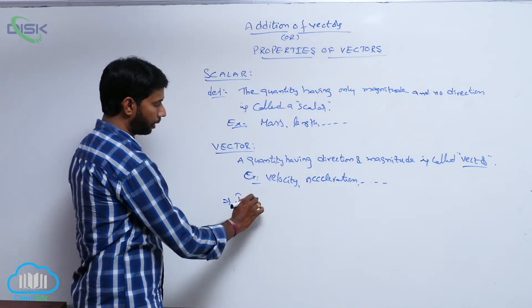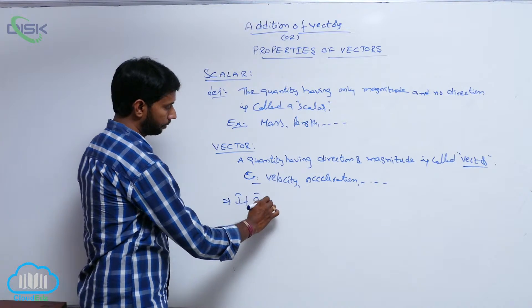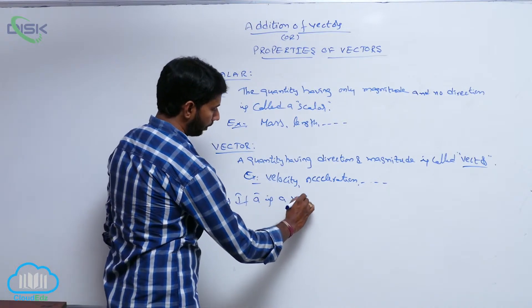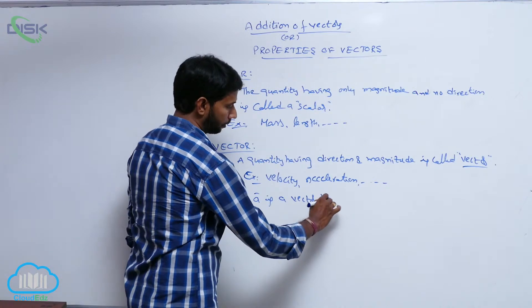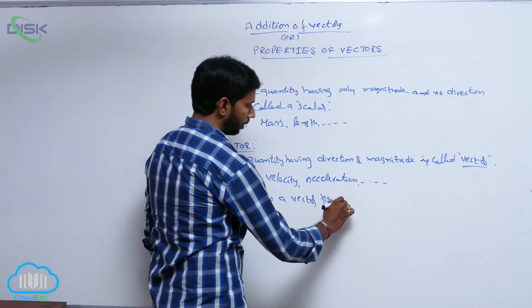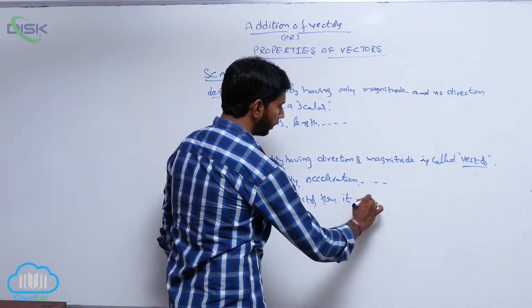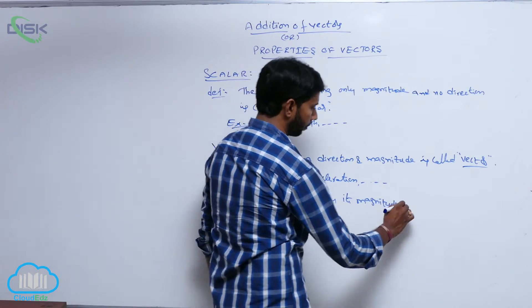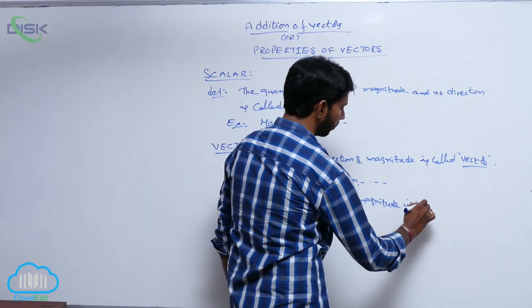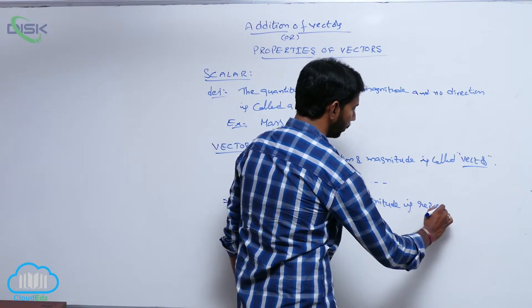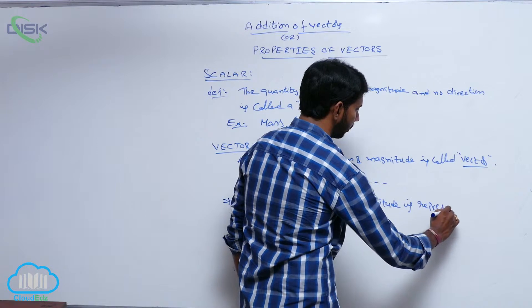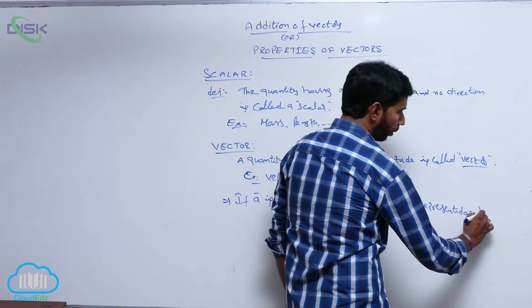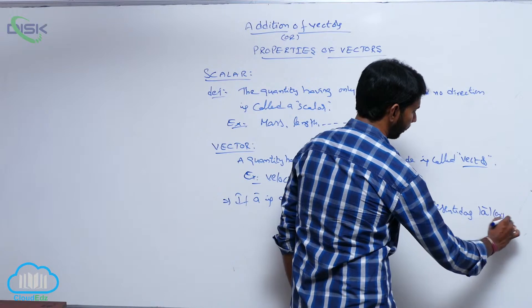Suppose if a-bar is a vector, then its magnitude is represented as mod a-bar, or simply a.